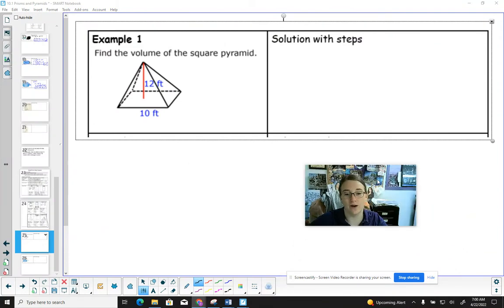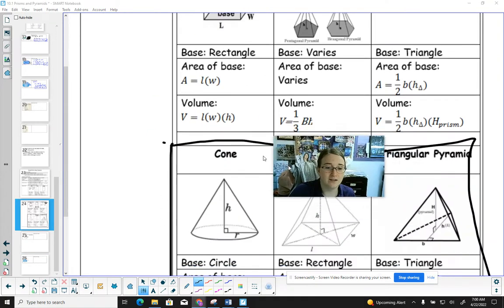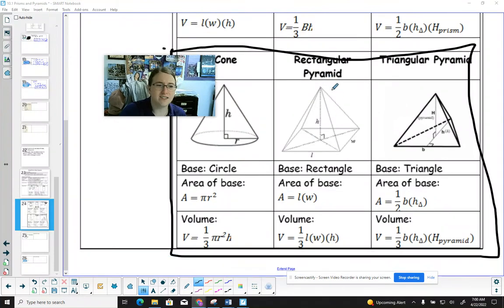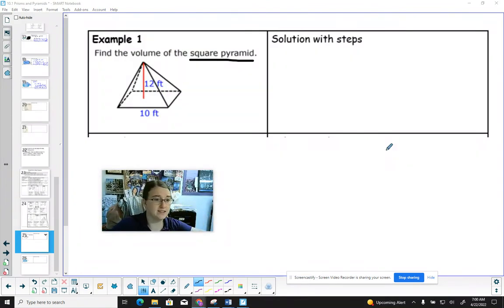It says find the volume of the square pyramid. Now this happens occasionally, I'm pretty sure on canvas, they don't always give you the name of the shape. But because it is a square pyramid, I know that is going to be the rectangular pyramid formula. Yeah, rectangles and squares have the exact same area, have the exact same volume involved. It's just that if it's a square pyramid, that means this base is a square.